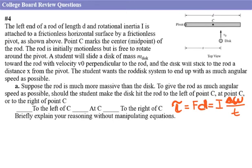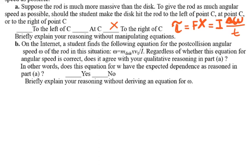The force doesn't change because the velocity is the same, so the farther away the disc hits the rod, the stronger the change in angular velocity. The variable here is X — the larger X is, the greater the torque. The inertia of the rod stays constant, and the force doesn't change. So with the largest X, you get the most change in velocity. You want to hit the rod to the right of point C.